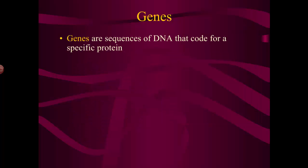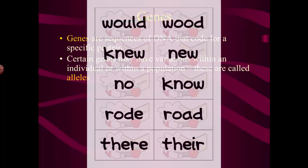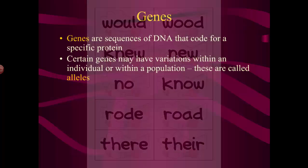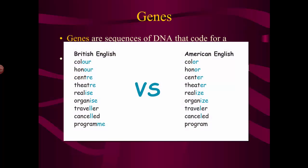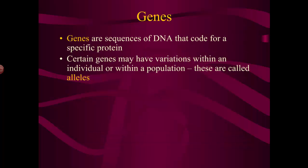DNA is split up into genes. Genes are sequences of DNA — sections of DNA, groups of bases that code for a particular protein. If you think of DNA as a long story or set of instructions, then the genes are the words. How you spell those words is very important, because if you spell them incorrectly, they might not be easily understood. If you have genes within an individual or population that have slight differences in their sequences — in other words, if the genes are spelled slightly differently but the meaning is still okay — those are called alleles. An allele is just a different spelling of the same word, a different sequence of bases of the same gene.